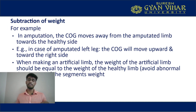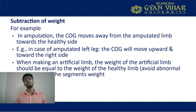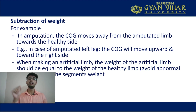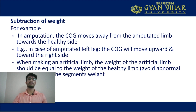Subtraction of weight — for example, amputation. The center of gravity will move away from the amputated limb toward the healthy side. In the case of an amputated left leg, the center of gravity will move upward and toward the right side because the weight on the left side is less. When making an artificial limb, the weight of the artificial limb should be equal to the weight of the healthy limb — if not, there will be improper weight distribution causing disruption in the center of gravity position and leading to various problems.